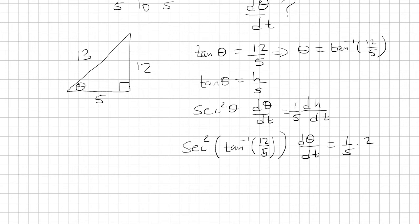And then at this point, we know that this is just an angle here, the inverse tangent of 12 over 5. So you're basically taking secant squared of theta here. Well, secant theta is 1 over cosine theta.